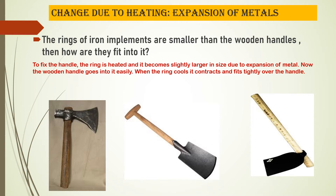Have you ever wondered how the wooden handles are fit into iron implements? There are some pictures of iron implements in this slide. You can see there is a ring for the iron implement and the wooden handle very snugly fits into the iron implement. It is so tight that when you use it, it does not come out of the wooden handle. How does this happen?